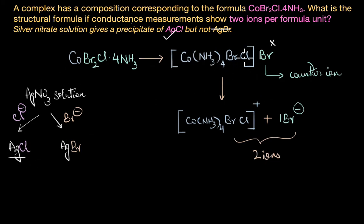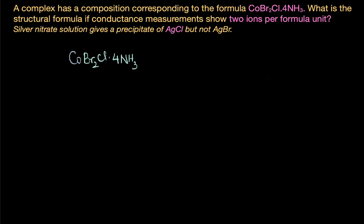Okay, so if we want chloride ions to be outside the sphere and ionizable, then we need to swap the halide ions here and that would give us this structure. Yes, [Co(NH₃)₄Br₂]Cl.